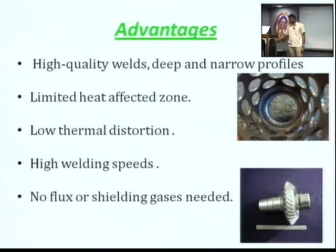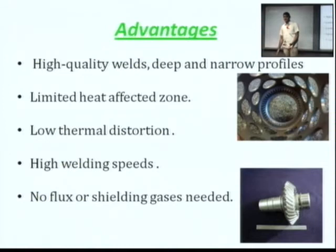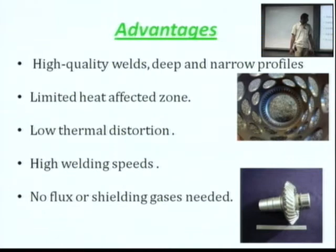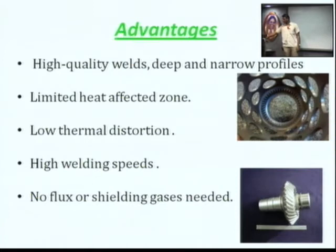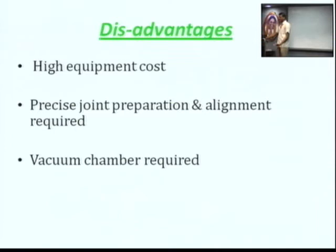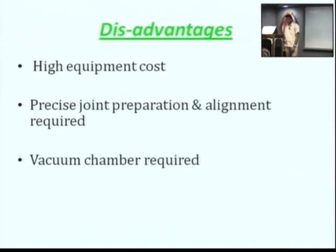The first point is very similar to laser beam welding, because there also it produces a very deep and narrow weld. Here also we have narrow welds, but in other processes there is low welding speed whereas here you can achieve high welding speed, and no flux is generated. The main disadvantage is the equipment is very costly. Unlike laser beam welding, which does not require a vacuum, here we have a vacuum chamber for this process, and the main disadvantage is it creates X-rays, which are very harmful to our body.